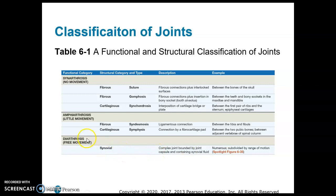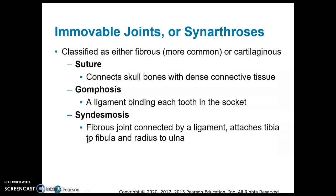Synovial joints are always diarthrosis joints — always free movement. Sutures connect skull bones. A gomphosis is the ligament that binds each tooth in its socket. A syndesmosis attaches the tibia to the fibula and the radius to the ulna — so the two bones of the lower leg and the two bones of the forearm are attached by a syndesmosis.